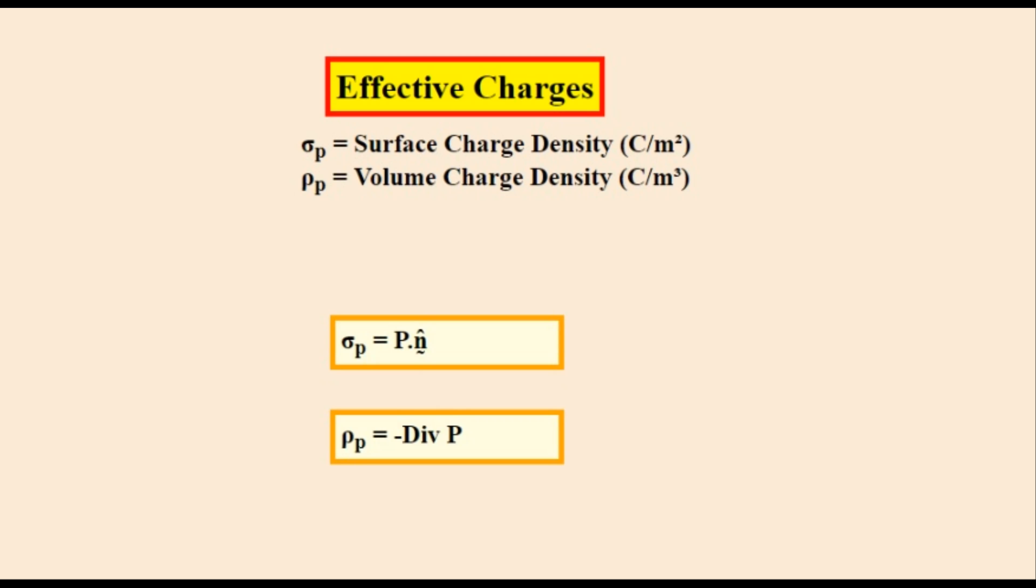Hello and welcome to this video about effective charges. These are the electric charges that can be mathematically substituted for an object's polarization. The surface charge density is the distribution of this charge over the surface area of an object, while the volume charge density is its distribution inside the object. These are given by the equations at the bottom.